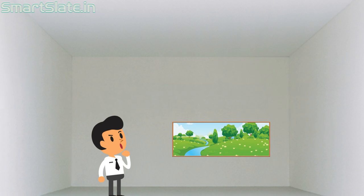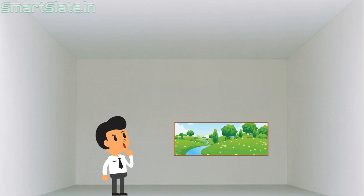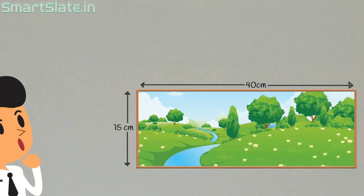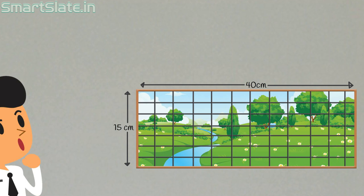Let's say you have a window in your room of size 15 cm by 40 cm — 40 cm in width and 15 cm in length — and you want a grill for your window. What is the maximum gap you can leave such that the spacing between each grill bar is equal? Well, try some lengths.